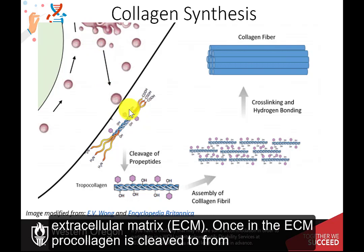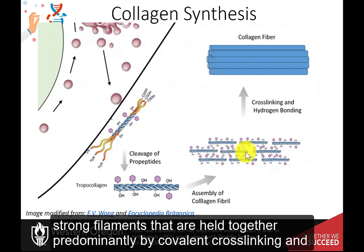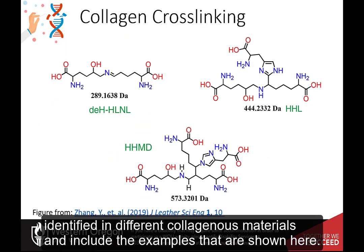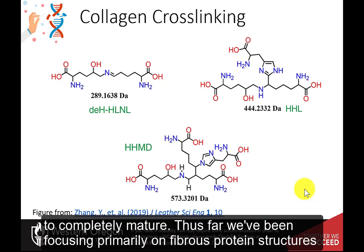Once in the ECM, procollagen is cleaved to form tropocollagen, and then it's assembled into a fibril. These are overlapping, strong filaments held together predominantly by covalent crosslinking and hydrogen bonding. Several types of naturally occurring covalent crosslinks have been identified in different collagenous materials. The process is quite complicated and can take an extended period of time for collagen fibrils to completely mature.